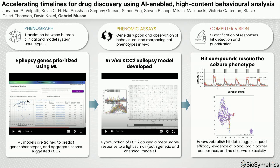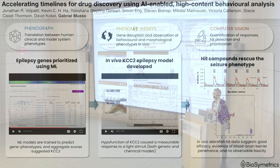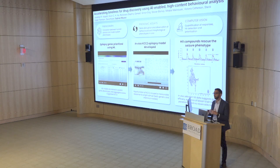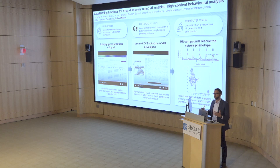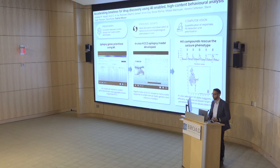That led us to a gene called KCC2, which has been associated with pediatric epilepsy and other types of neurological disorders. We made both a genetic and a CRISPR model in embryonic zebrafish. Zebrafish are a transparent model organism, and we've developed a high-content in vivo system for imaging them. We can automatically identify different morphological and behavioral characteristics simultaneously, building out a rich barcode of phenotypes that we can associate to very specific genetic and small molecule effects.